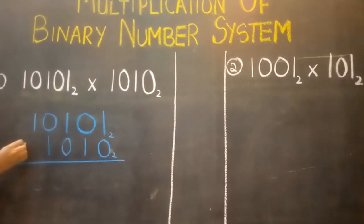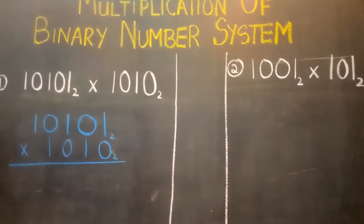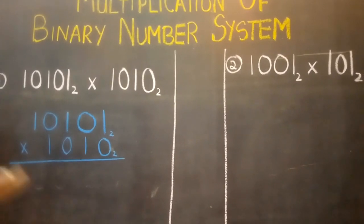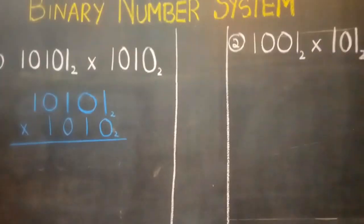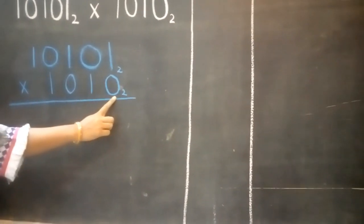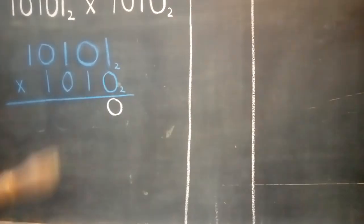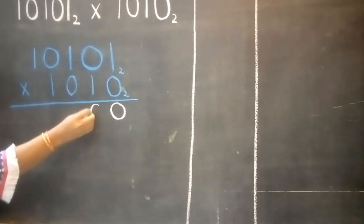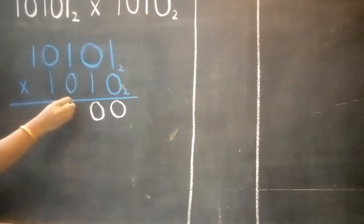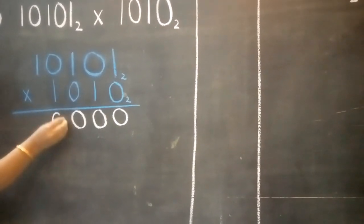We will multiply both these binary numbers. Now starting from the right hand side, when we are multiplying we will follow the same rule of multiplication. We will start our multiplication from the right hand side taking the first digit 0. 0 ones are 0, 0 zeros are 0, 0 zeros are 0, 0 ones are 0.